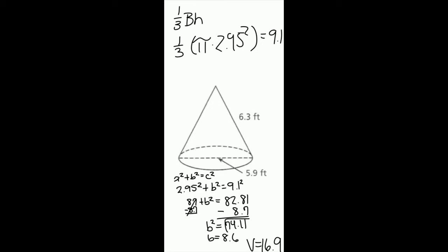a squared is 2.95 squared, b squared stays the same, and c squared is 9.1 squared. Find the squared number of each: a is 8.7 and c is 82.81.